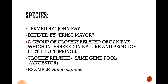The first category is Species. The word 'Species' was first termed by John Ray, and it was defined by Ernst Mayer. Species means: a group of closely related organisms which interbreed in nature and produce fertile offspring. These species are capable of producing new young ones which are fertile. Closely related means they share the same gene pool or ancestors.